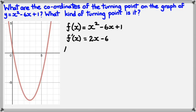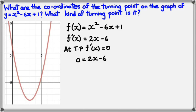Now, we also know that at turning points, the gradient is equal to 0. So f dash of x is equal to 0. It's a simple matter of substituting 0 and finding out what the x value is — this is stuff that you would have done last year. And as you can see, x is equal to positive 3.